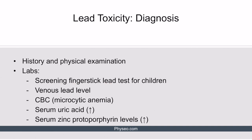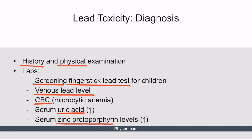The diagnosis of lead toxicity begins with a careful history and physical exam looking for likely sources of lead exposure and signs or symptoms of lead poisoning. In children, laboratory evaluation should start with a screening finger stick lead test, which if elevated should be confirmed with a venous lead level. In adults, a venous lead level should be obtained directly. If a CBC is ordered, it can reveal microcytic anemia. Other notable findings include elevated serum uric acid — caused by lead's interference with purine metabolism — and elevated serum zinc protoporphyrin, caused by interference with heme synthesis.